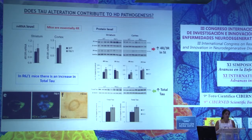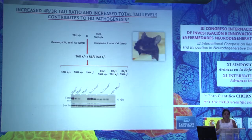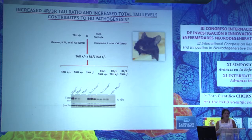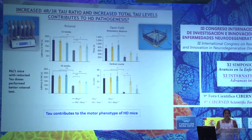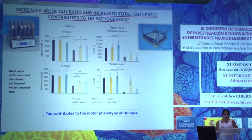We then wanted to know if tau is contributing to Huntington's disease pathology. We reduced total tau levels in HD mouse models either partially or totally. The R6/1 mice have a well-known motor phenotype deficit, and when we reduced tau levels partially or totally, the mice performed better on motor tasks. We can therefore say that tau is contributing to the motor phenotype of the disease.